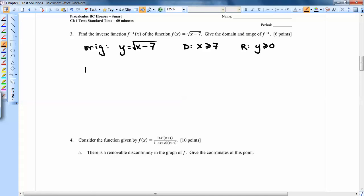Okay, so for inverses, we switch the x and the y. So x equals root y minus 7, and then we can isolate. So x squared equals y minus 7, x squared plus 7 equals y,